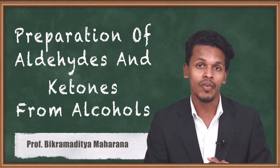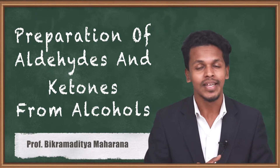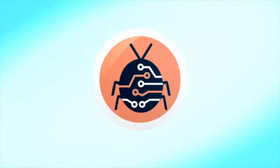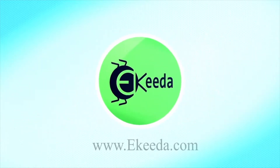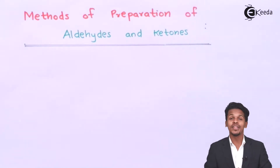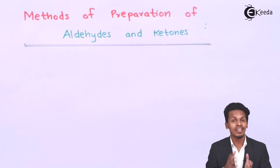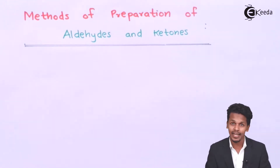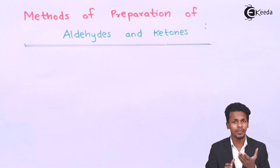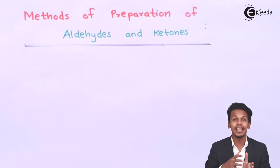We will look at the different methods from which we could prepare aldehydes and ketones. Aldehydes are of different types — they could be aliphatic aldehydes or aromatic aldehydes. Similarly, ketones could be aliphatic ketones or aromatic ketones, for example benzophenone, which is an aromatic ketone.